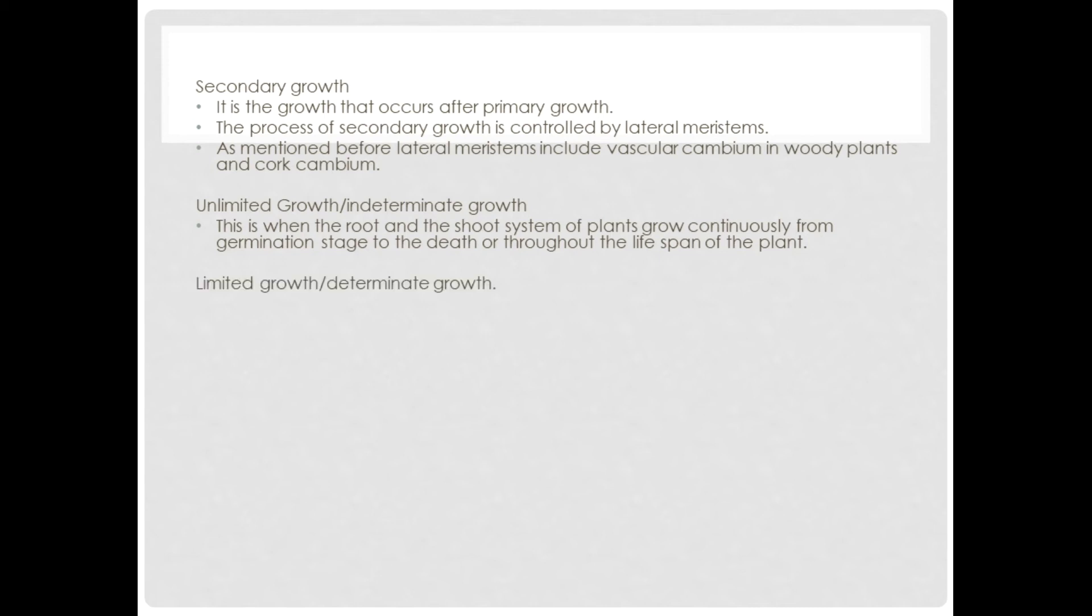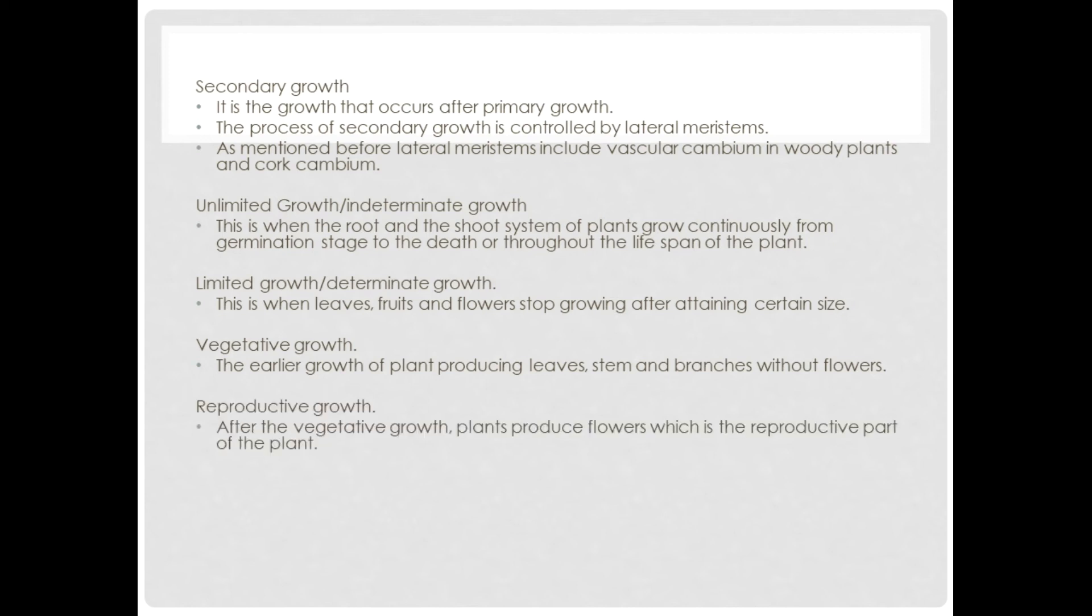Next, we have limited growth or determinate growth. This is when leaves, fruits and flowers stop growing after attaining a certain size. Next, we have vegetative growth. This is the earlier growth of a plant producing leaves, stem and branches without flowers. Next, we have reproductive growth. This is when plants produce flowers, which is the reproductive part of a plant.